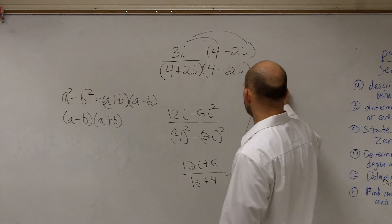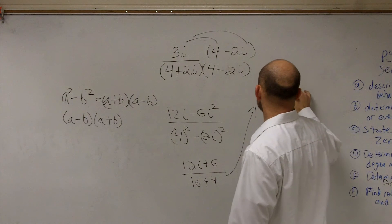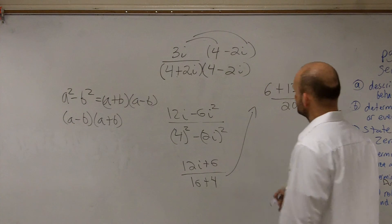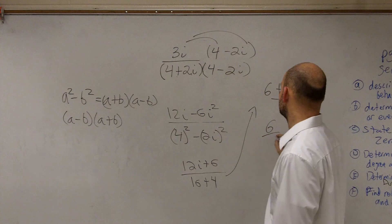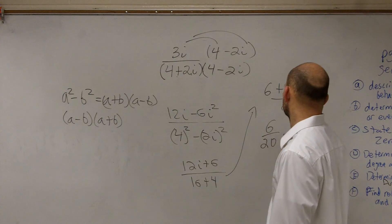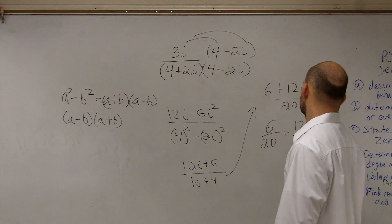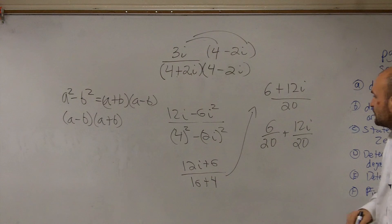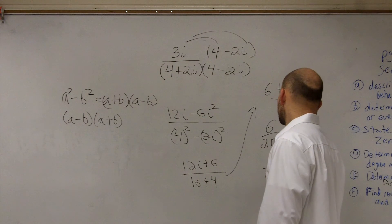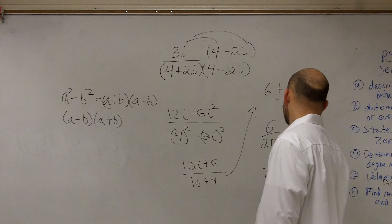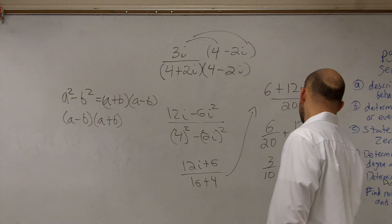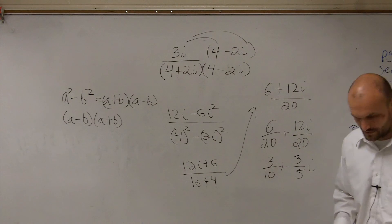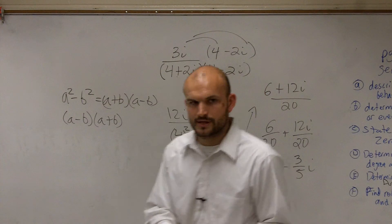Continuing this problem, I'm going to rearrange this to 6 plus 12i divided by 20. Then I break it up and simplify, which gives 3 tenths plus 3 fifths i. There's your answer.